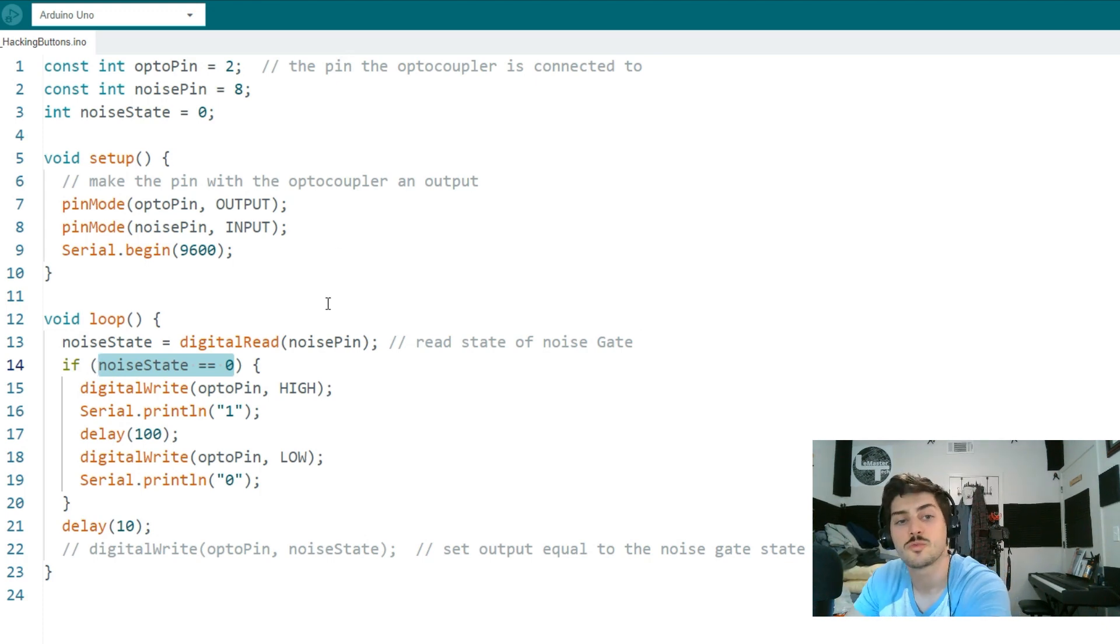If the noise state is zero, because they're normally on, so if everything is quiet you'll be getting a one, and then when noise is made it'll break that and it'll go to a zero. When the noise state is zero for the first time, like you just said something, we're going to turn on the octocoupler. Then I'm going to print a one in the window so I know we just turned something on. I'm just going to wait a tenth of a second so that if it's like flickering, it'll only run once.